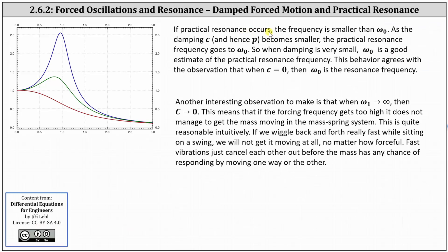If practical resonance occurs, the frequency is smaller than ω_0. As the damping c and hence p becomes smaller, the practical resonance frequency approaches ω_0. So when damping is very small, ω_0 is a good estimate of the practical resonance frequency. This behavior agrees with the observation that when c = 0, when no damping is present, then ω_0 is the resonance frequency.